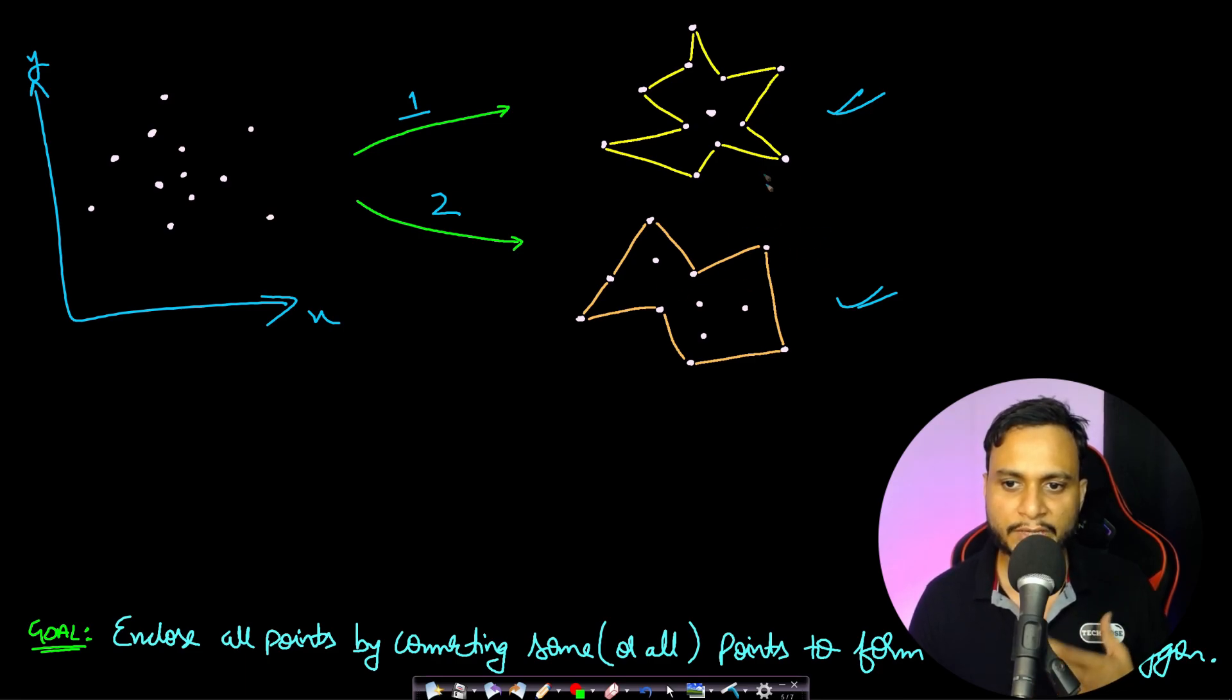But by the previous classification of regular and irregular polygon, you must be able to make out that since there is at least one reflex angle, there are more than one reflex angle. Since there is at least one reflex angle greater than 180 degrees, so this will be an irregular polygon and similarly the second one will also be an irregular polygon.